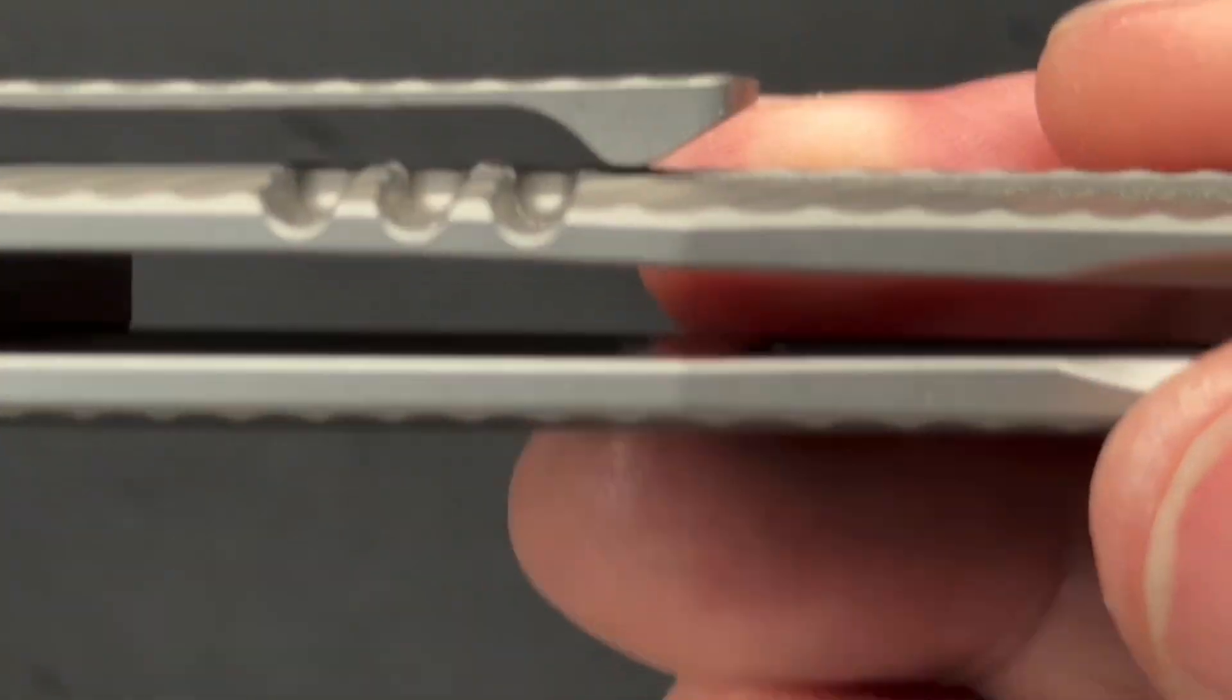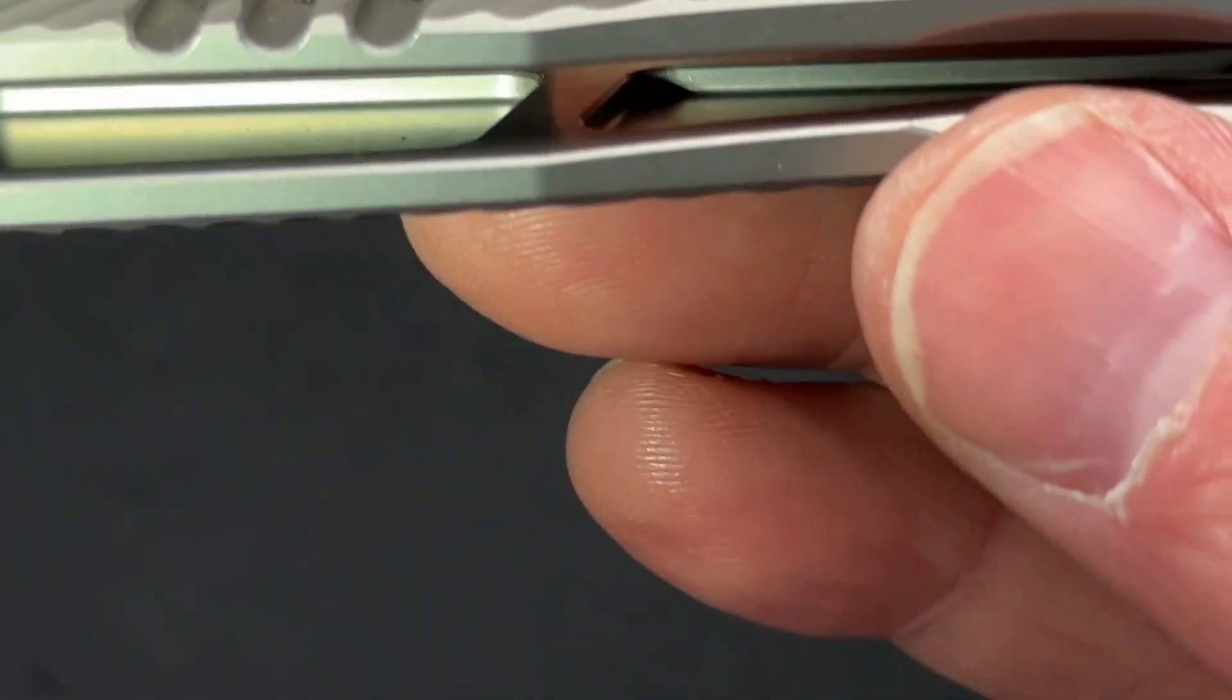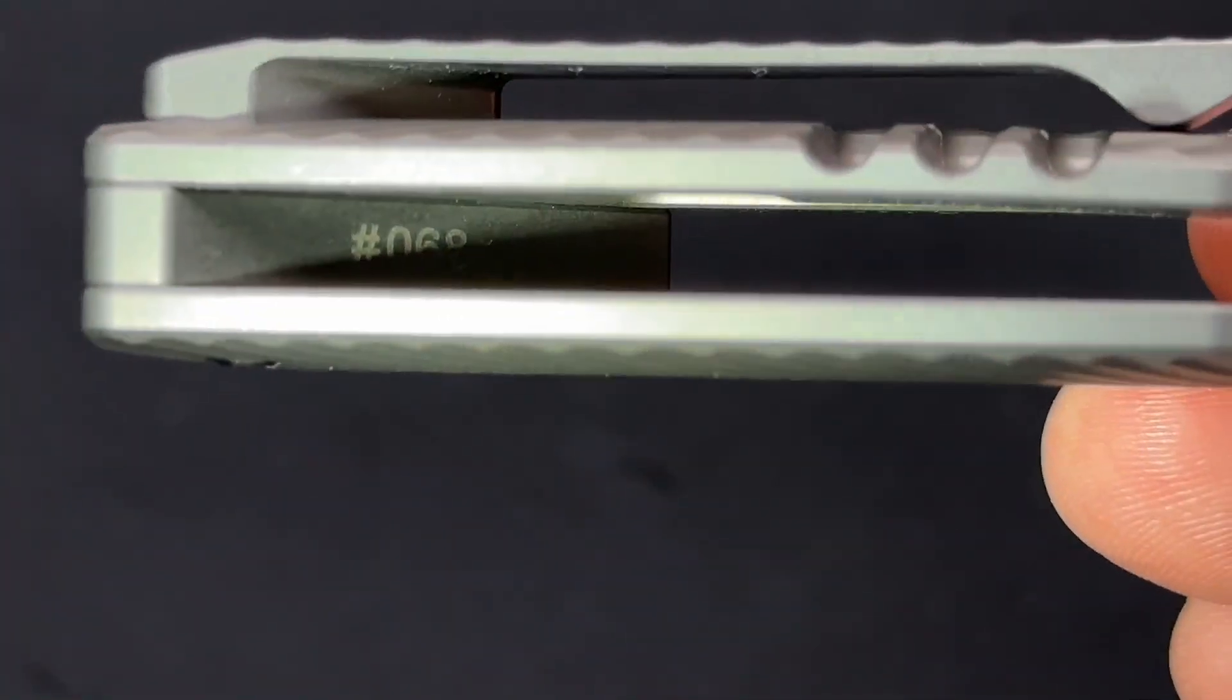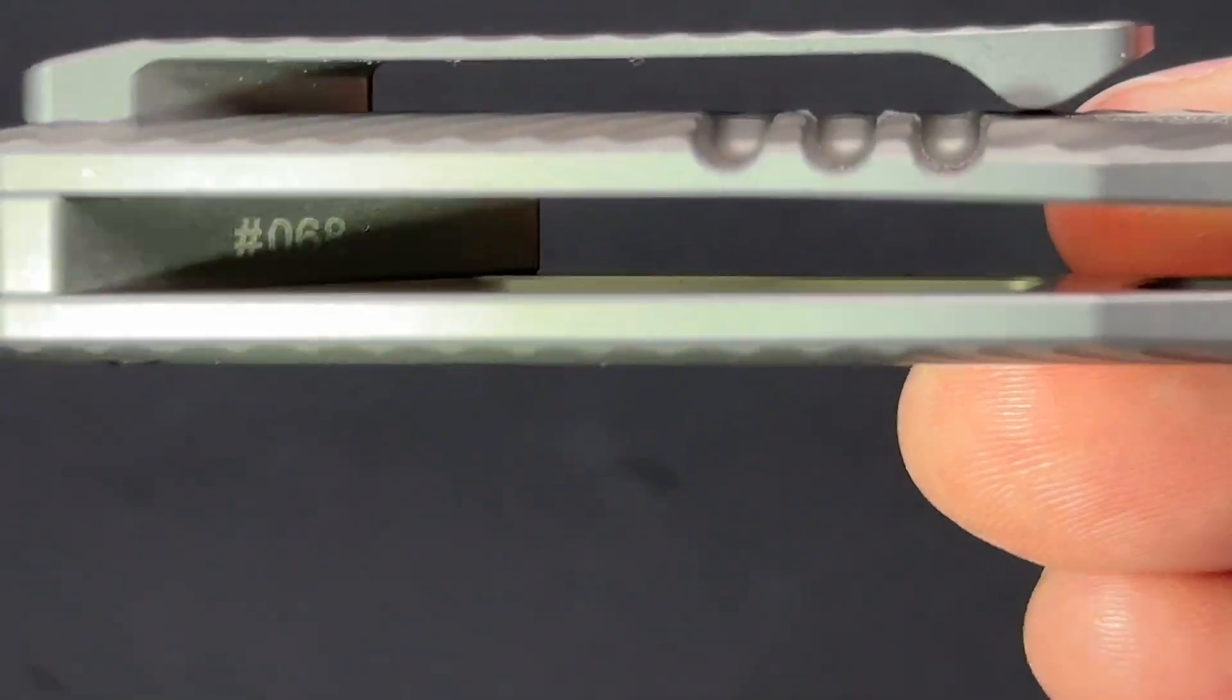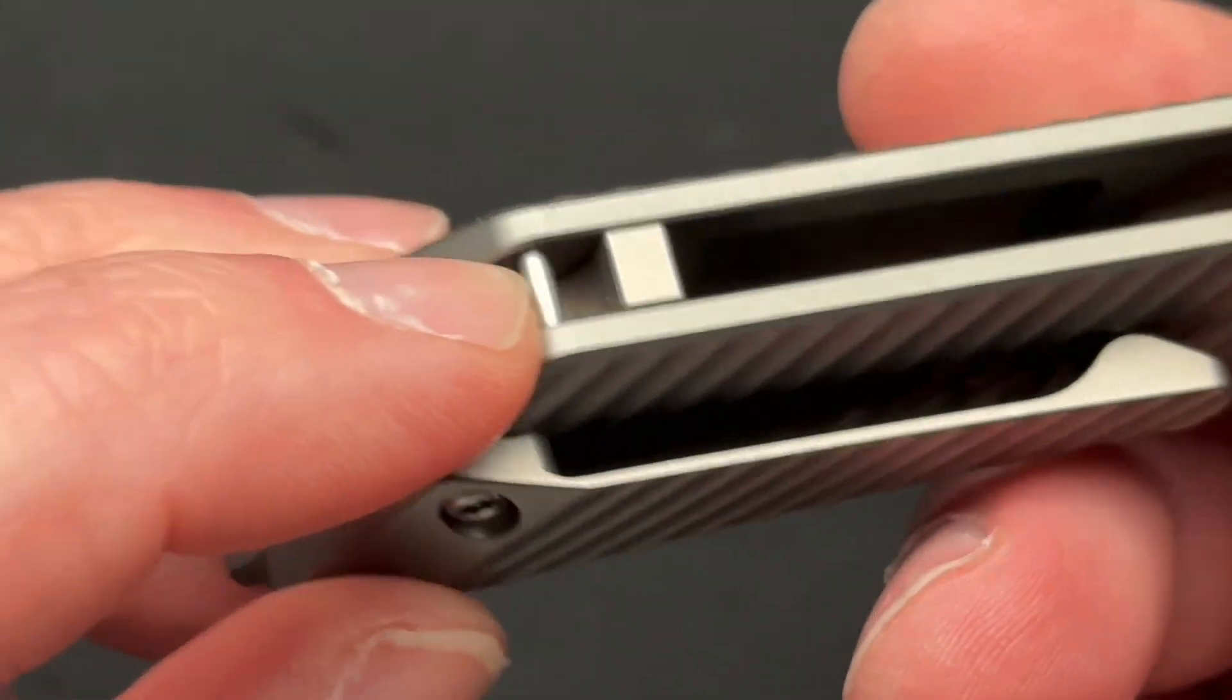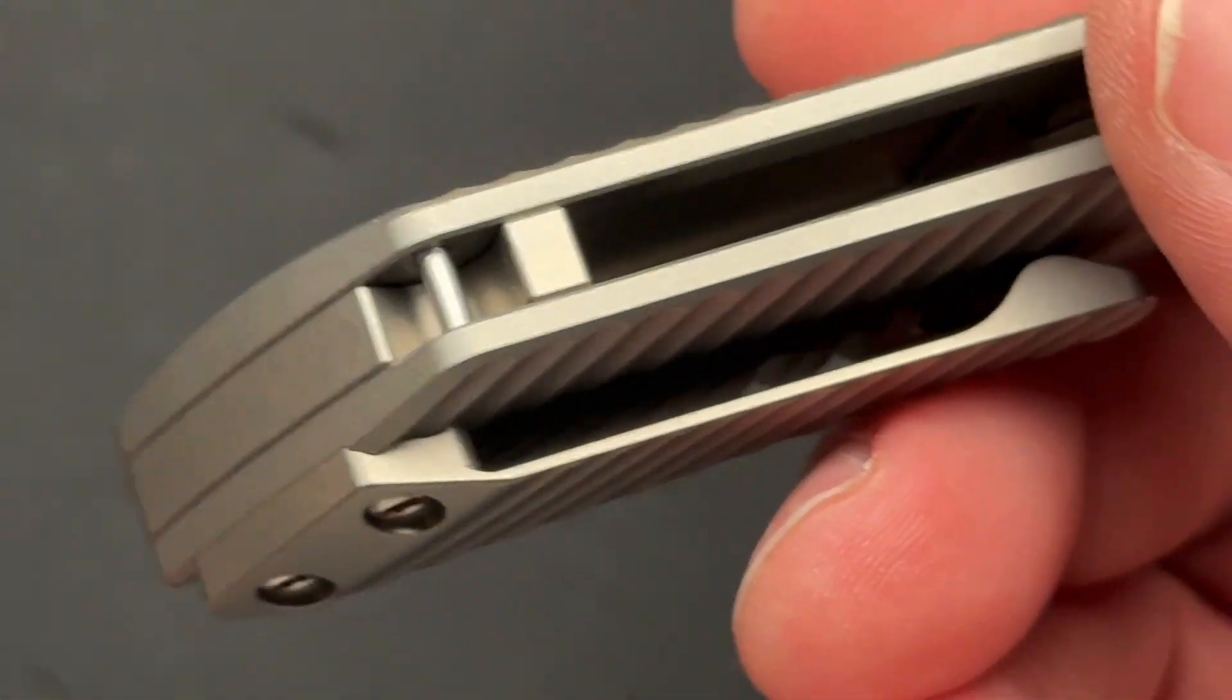Some good milling on the inside of the scales. Let's see if I can show you that. Got some milling there on the lock side, and then two big grooves on the show side. And then there is the serial number there on the backspacer. You do have a lanyard hole, a lanyard attachment area.